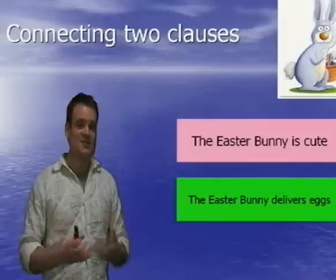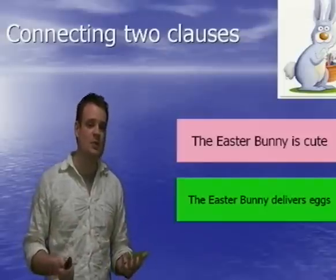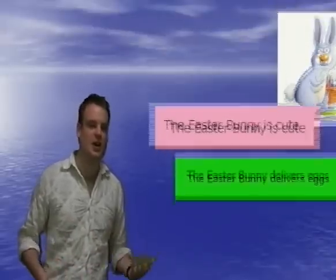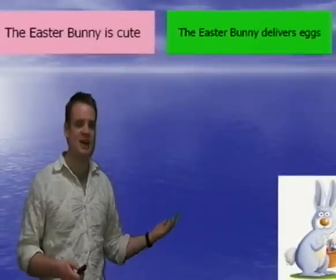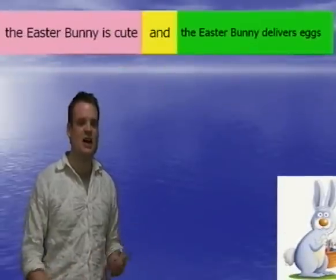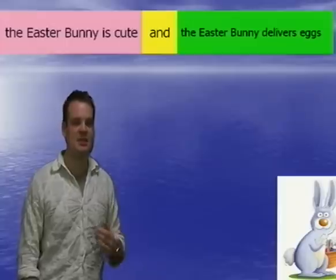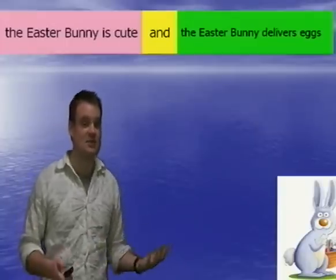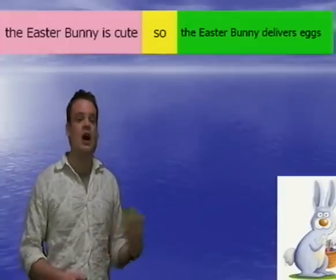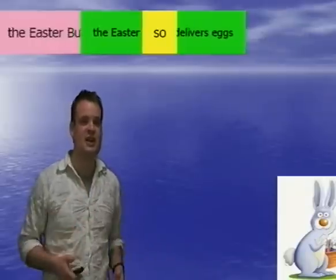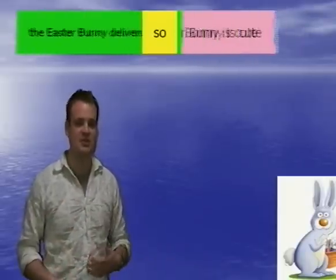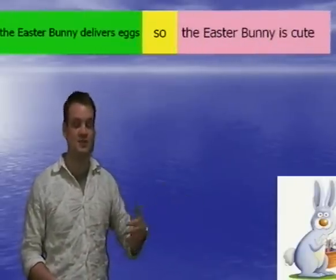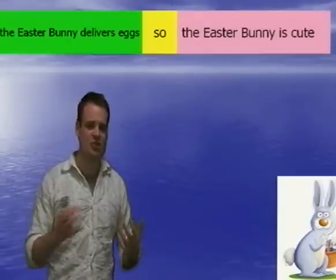What we now need to do is join these together. The obvious way would be to use a conjunction, so I'm going to join them together using the word 'and'. The Easter Bunny is cute and the Easter Bunny delivers eggs — or the Easter Bunny is cute and he delivers eggs. We could change that and use 'so', or indeed switch our clauses around. So now we have: the Easter Bunny delivers eggs, so the Easter Bunny is cute.